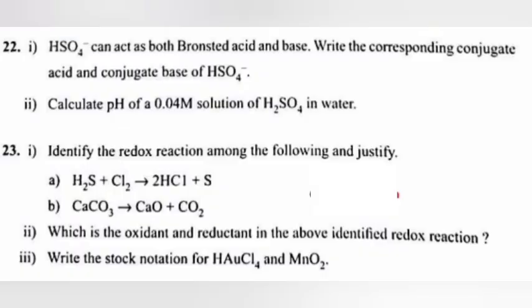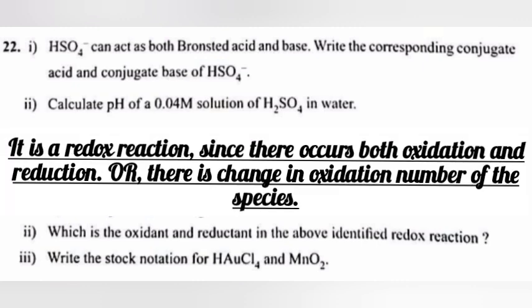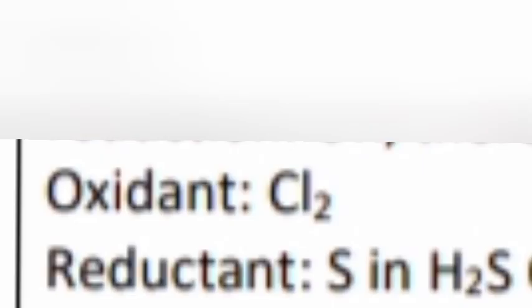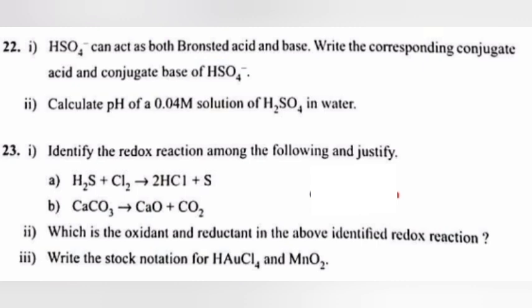Question 23: 1. Identify the redox reaction among the following and justify. Answer: a. H2S plus Cl2 gives 2 HCl plus S is a redox reaction since there occurs both oxidation and reduction, or there is a change in oxidation number of the species. 2. Which is the oxidant and reductant in the above identified redox reaction? Answer: Oxidant Cl2, reductant S in H2S. 3. Write the stock notation for HAuCl4 and amino 4. Answer: HAu3Cl4, Mn4O2.